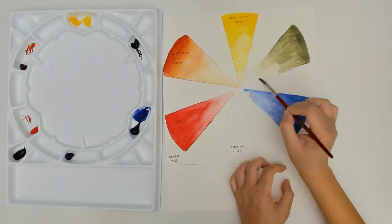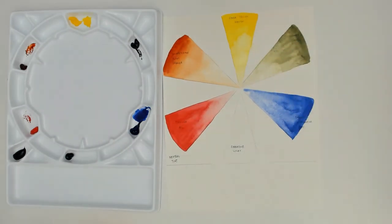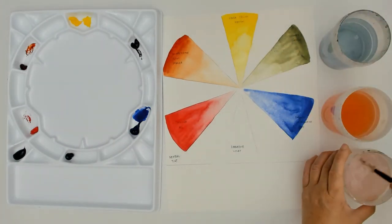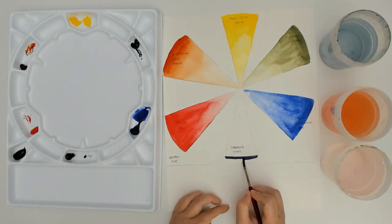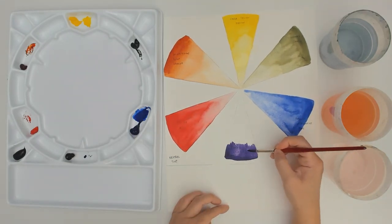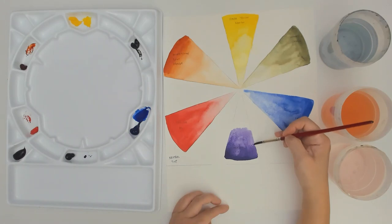Same thing with the green. Yellow plus blue makes green so you can mix those colors up and have green. And at the bottom is the same thing. If you mix red and blue, it will make violet.